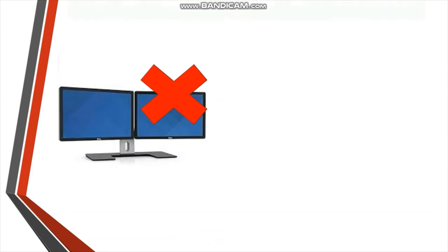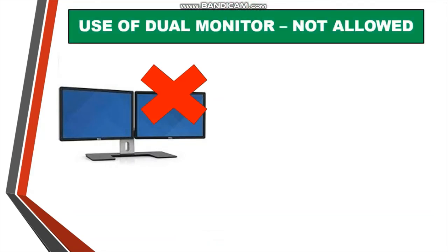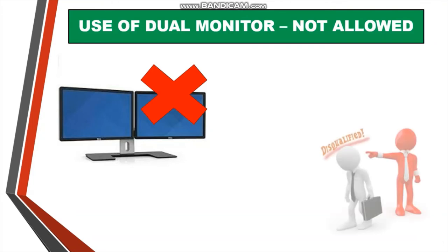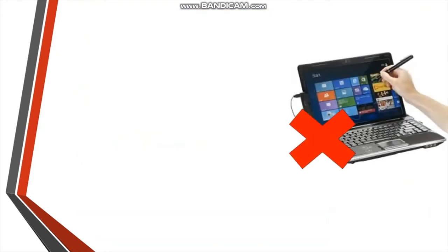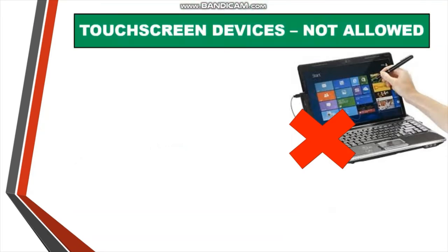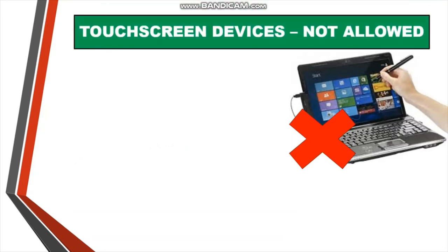Use of dual monitors is prohibited while giving the exam. You are not allowed to use more than one system while giving the exam. If you use more than one system, you may get disqualified from the exam. Additionally, use of touch-screen devices is prohibited in the ACCA remote computer-based exam. Systems with a touch-screen facility are not allowed for ACCA computer-based exams.